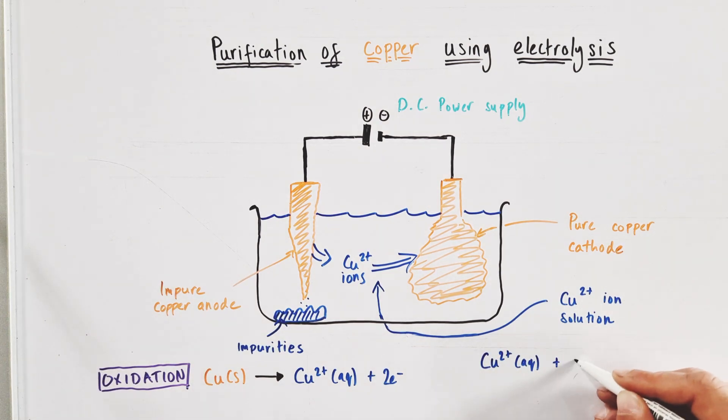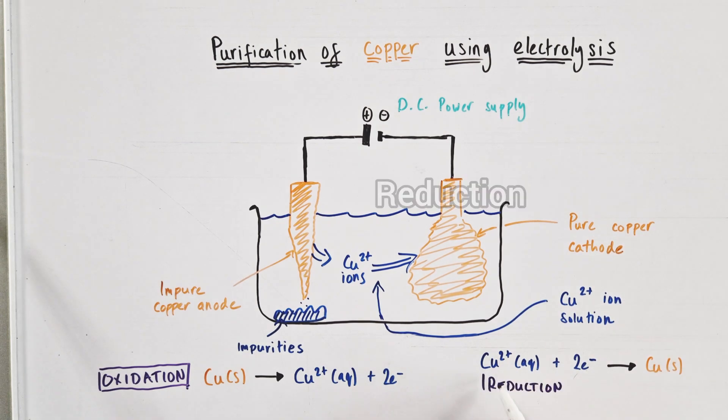Conversely, at the negative cathode, copper 2 plus ions are being attracted towards it, gaining two electrons and being reduced, and this is causing copper to deposit steadily onto the surface of the pure copper cathode.